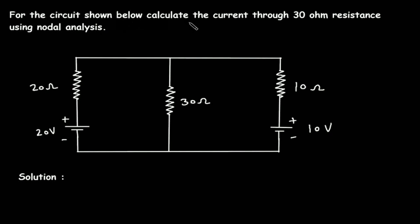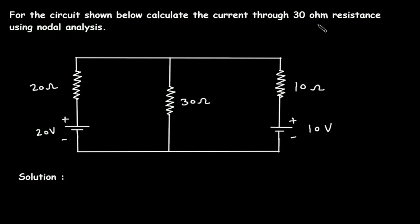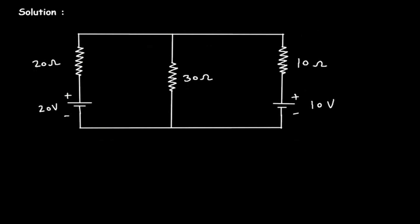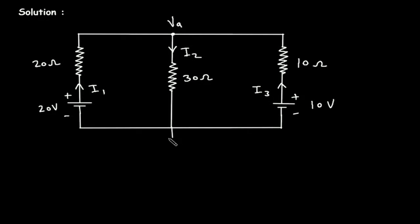For the circuit shown below, calculate the current through 30 ohm resistance using nodal analysis. We have to calculate current through this 30 ohm resistance using nodal analysis. Let's say this is current I1, this is current I2, and this is current I3. We have to calculate current I2. Let's assume this is node VA and this is the ground node.